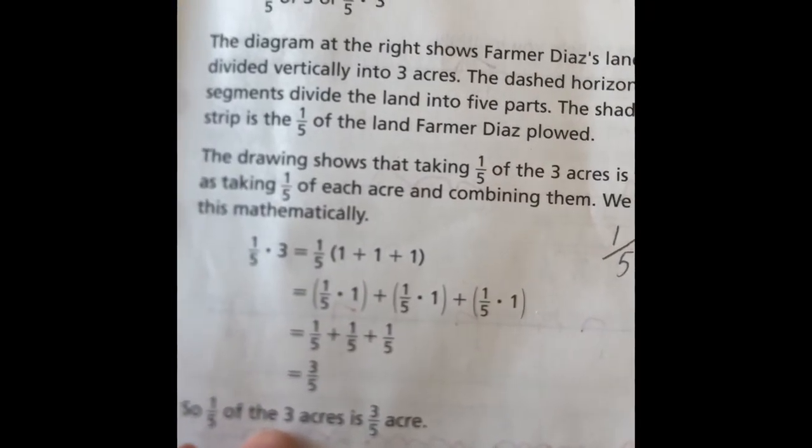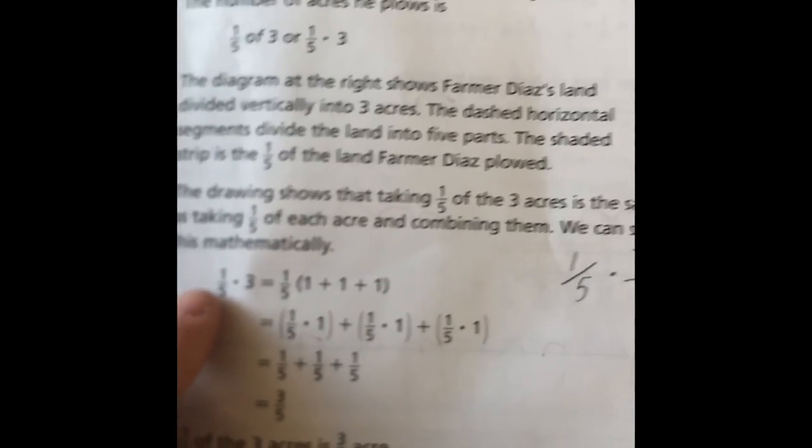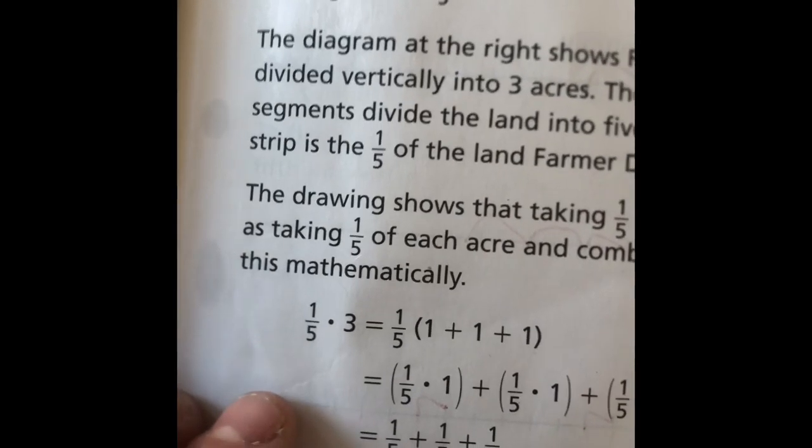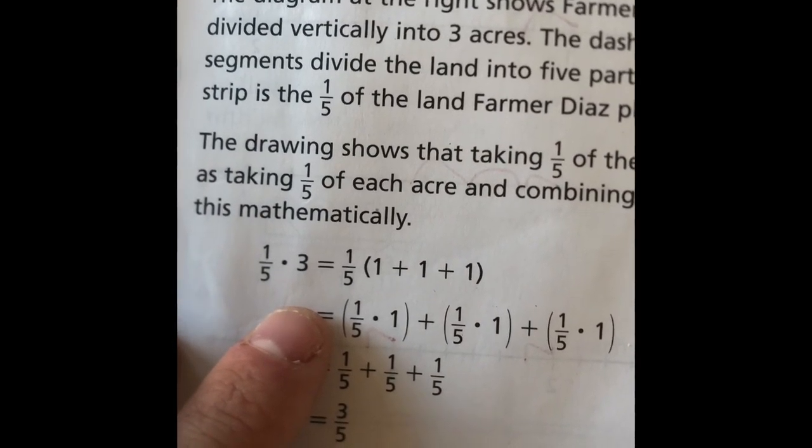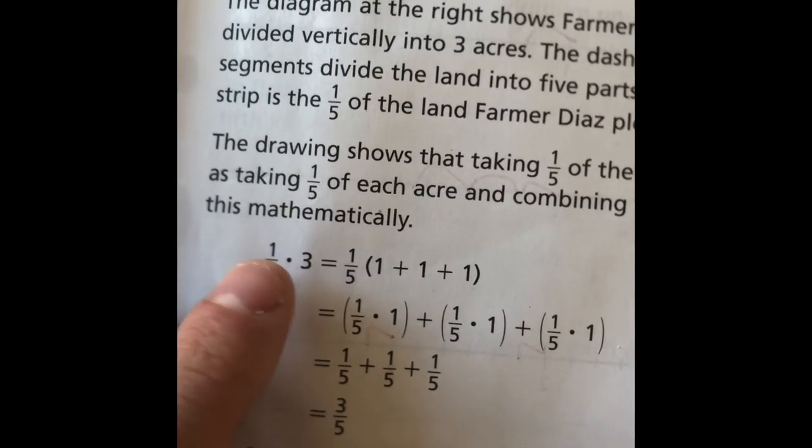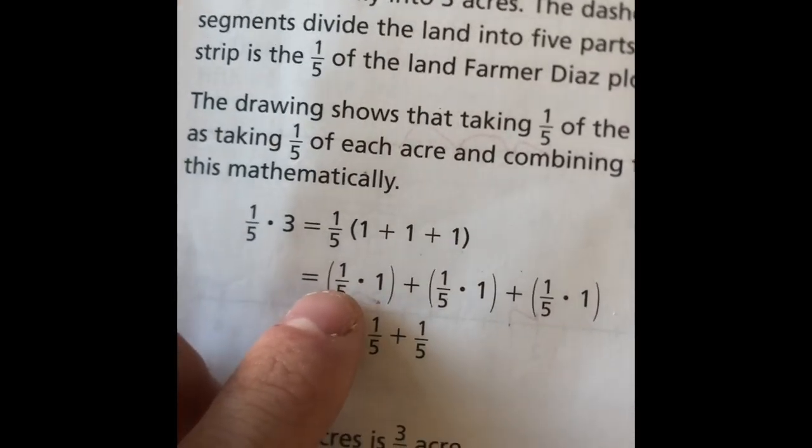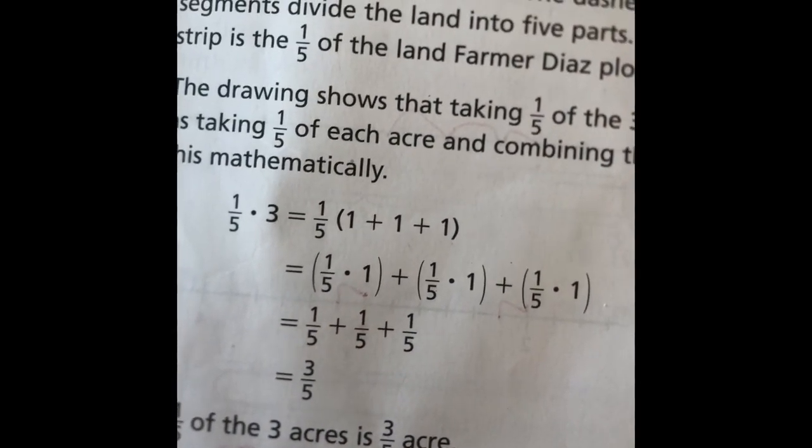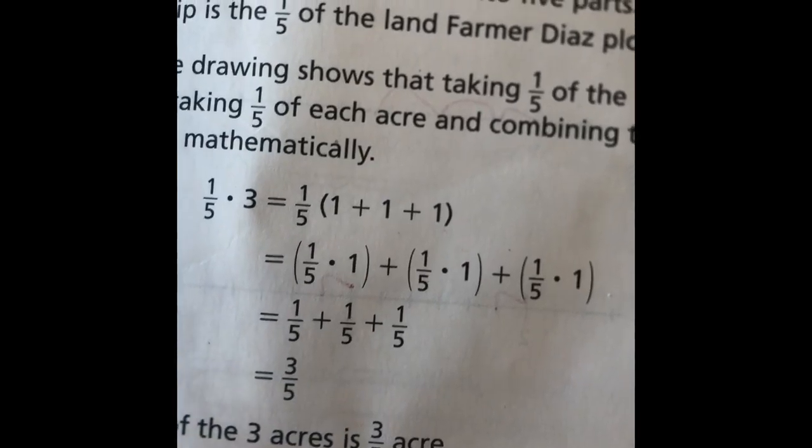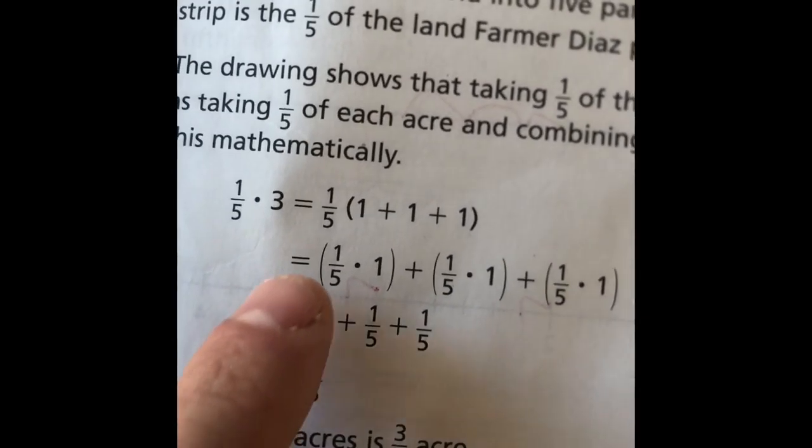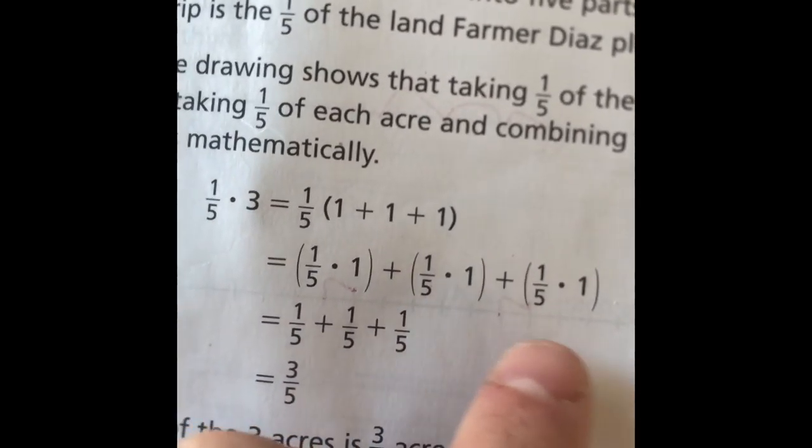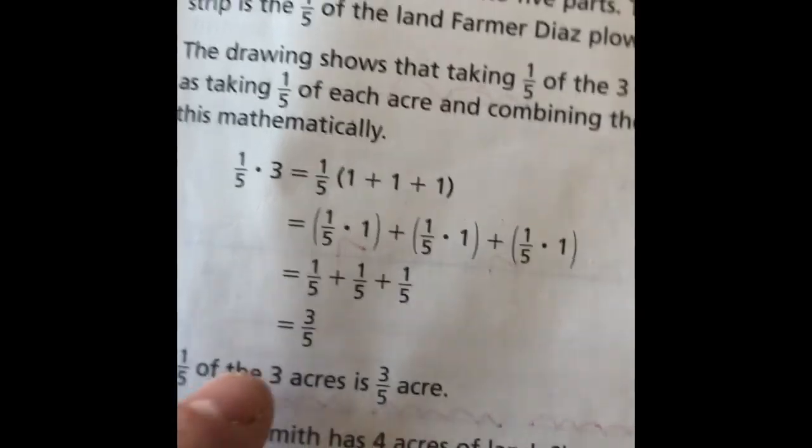The example solves the problem by taking one-fifth of the three acres, being the same as taking one-fifth of each acre and combining them. They showed this by setting up their problem: one-fifth times three equals one-fifth. The three has been broken down into one in each, and they used distributive properties to distribute the one-fifth to each one. Anytime you multiply a value by one, it just equals itself. So one-fifth times one, one-fifth times one, one-fifth times one is just one-fifth three times, which gives us three-fifths.